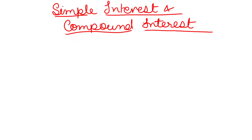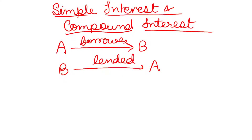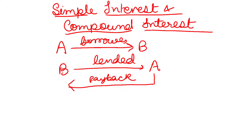Simply, when a person A borrows money from B, person A will have to return that money — we can say that B has lent a certain amount to A. Then A will have to pay it back to B after some time: the same amount plus some additional amount. That additional amount is basically the cost which A has to pay to B for using that money. That additional amount I is called the interest on the borrowed sum.